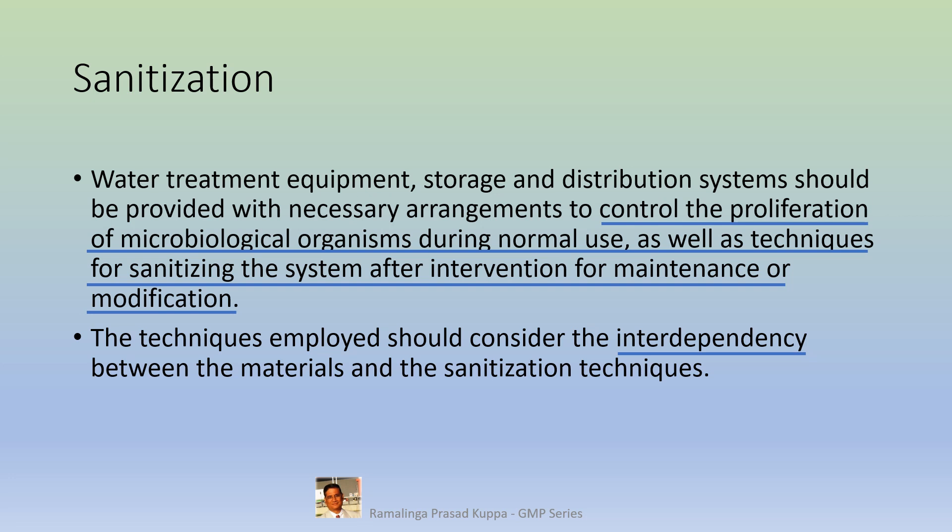For example, for microbial control, chlorine is dosed into the input water for purification. Unless the chlorine is neutralized to less than 0.5 ppm, the RO membranes get damaged.